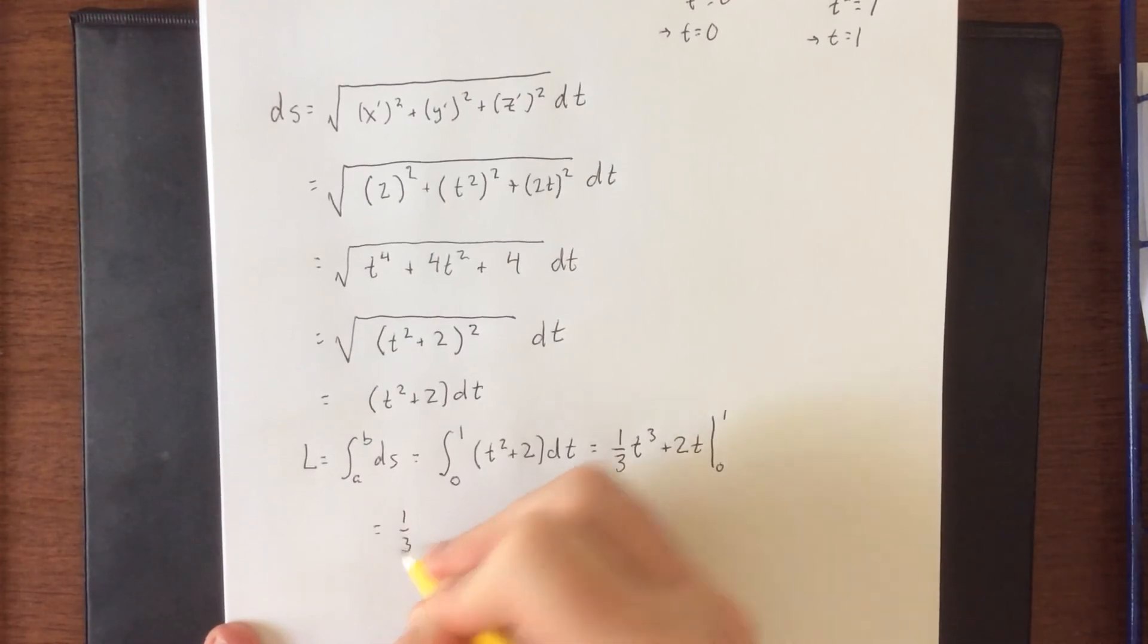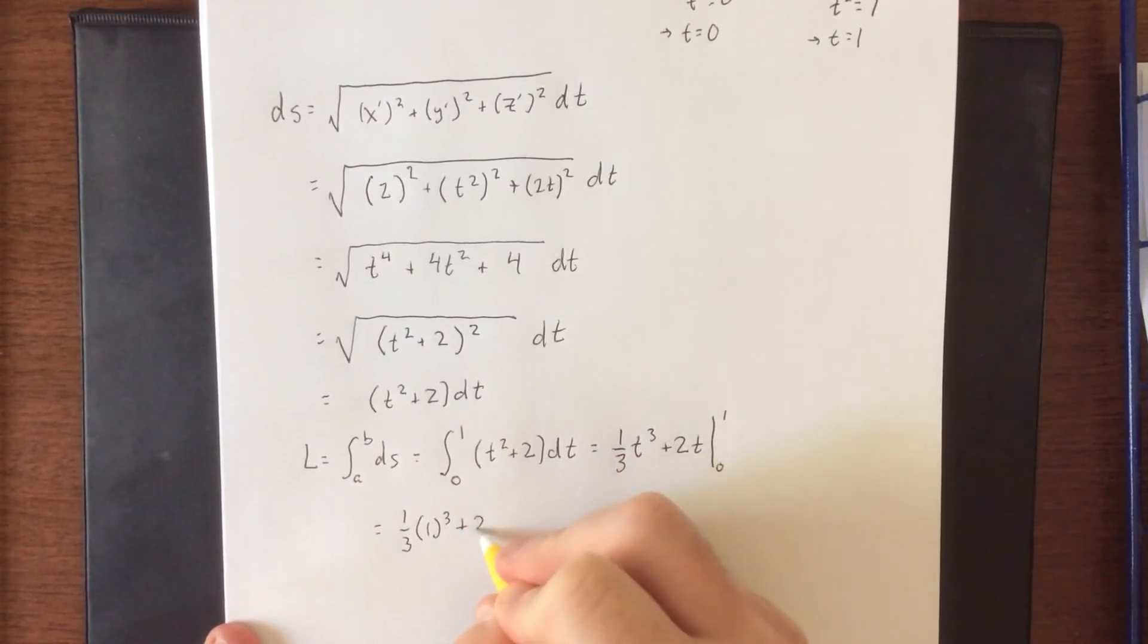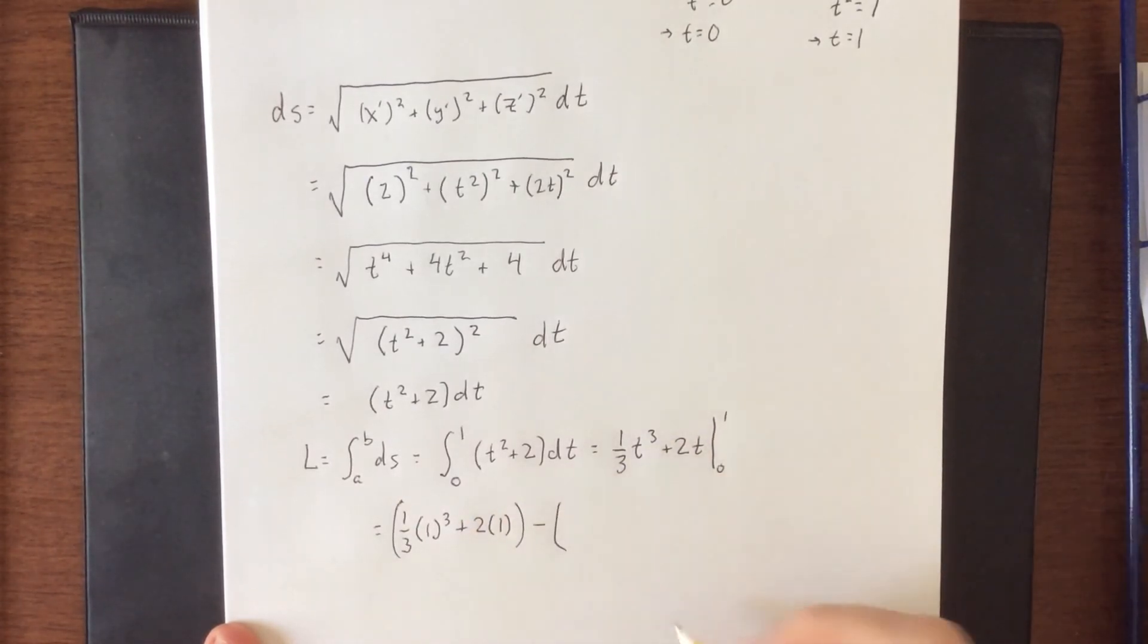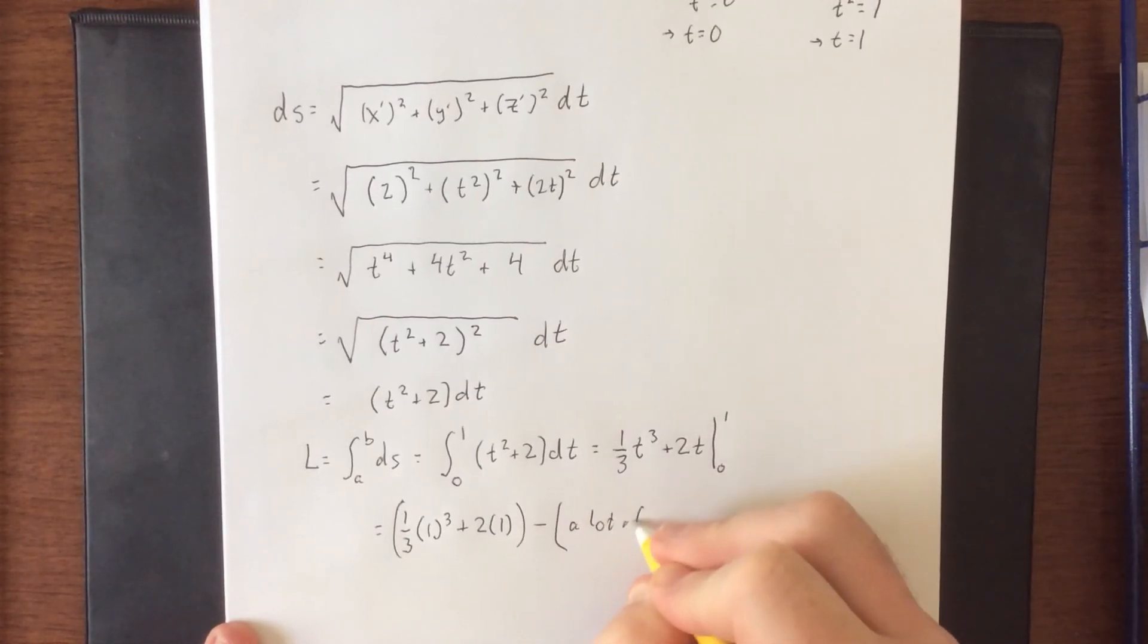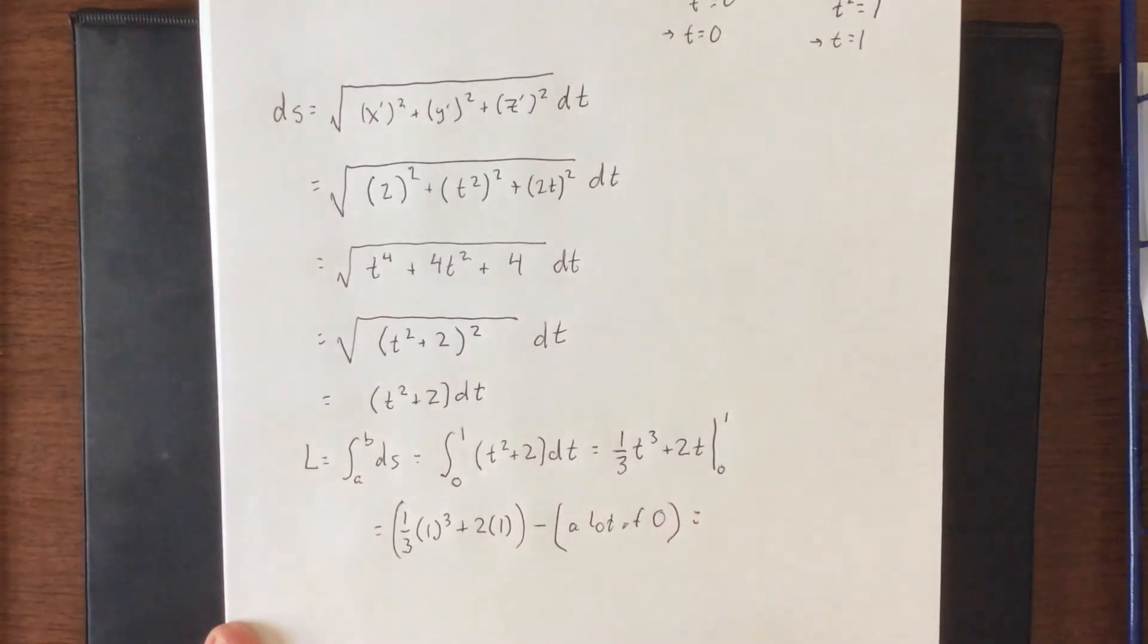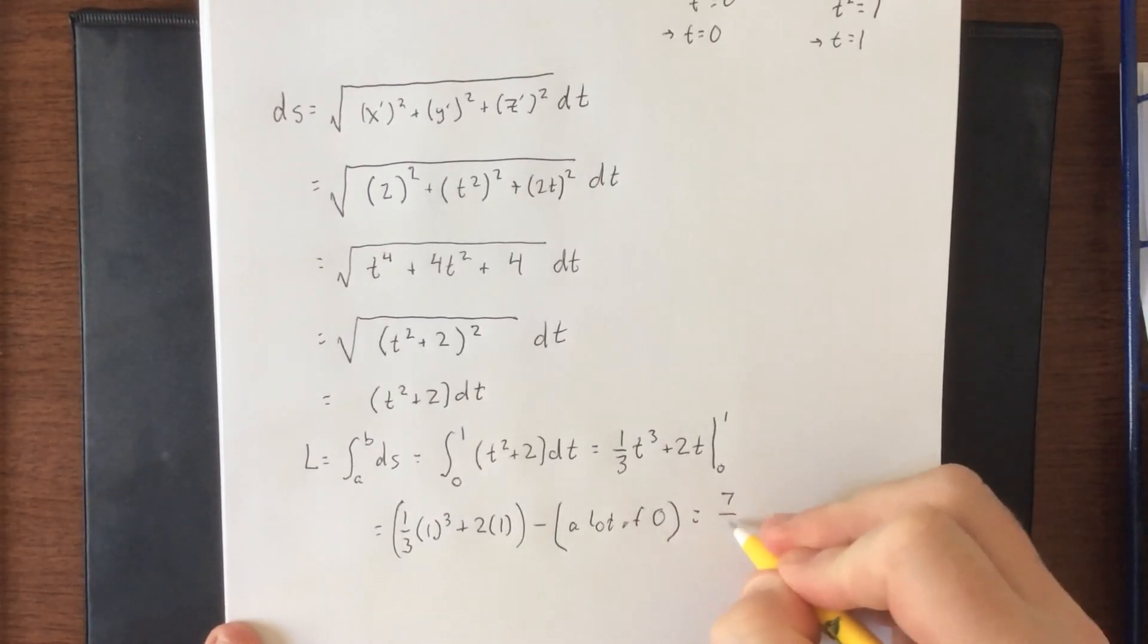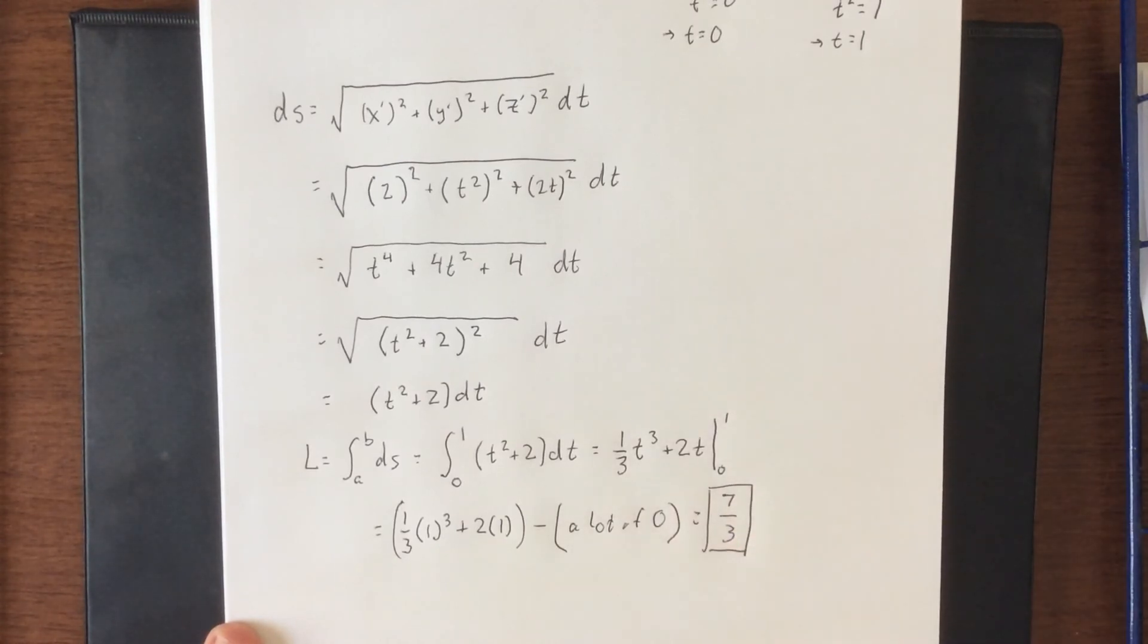Therefore, we're going to wind up with one-third of 1 cubed plus 2 times 1, minus when I plug in t equals 0, we are simply going to get a lot of 0. Combining our like terms together, we have 2 plus 1/3, get a common denominator for those, and add them up, we get a final answer of 7/3.